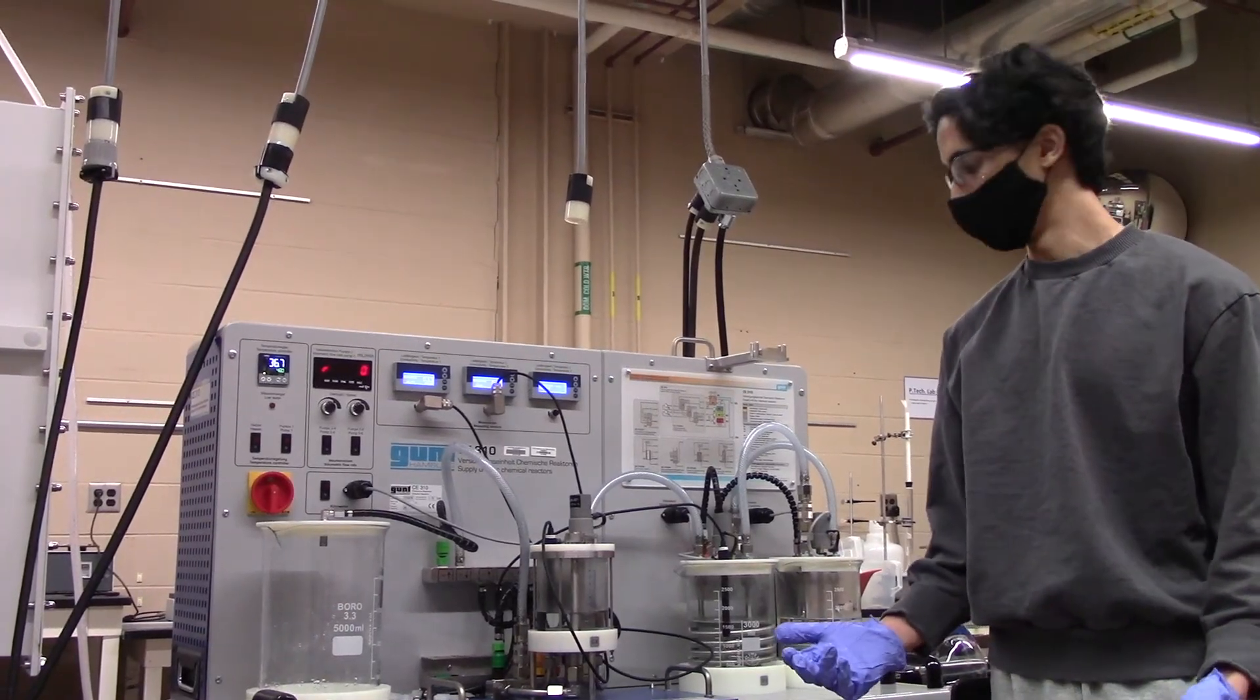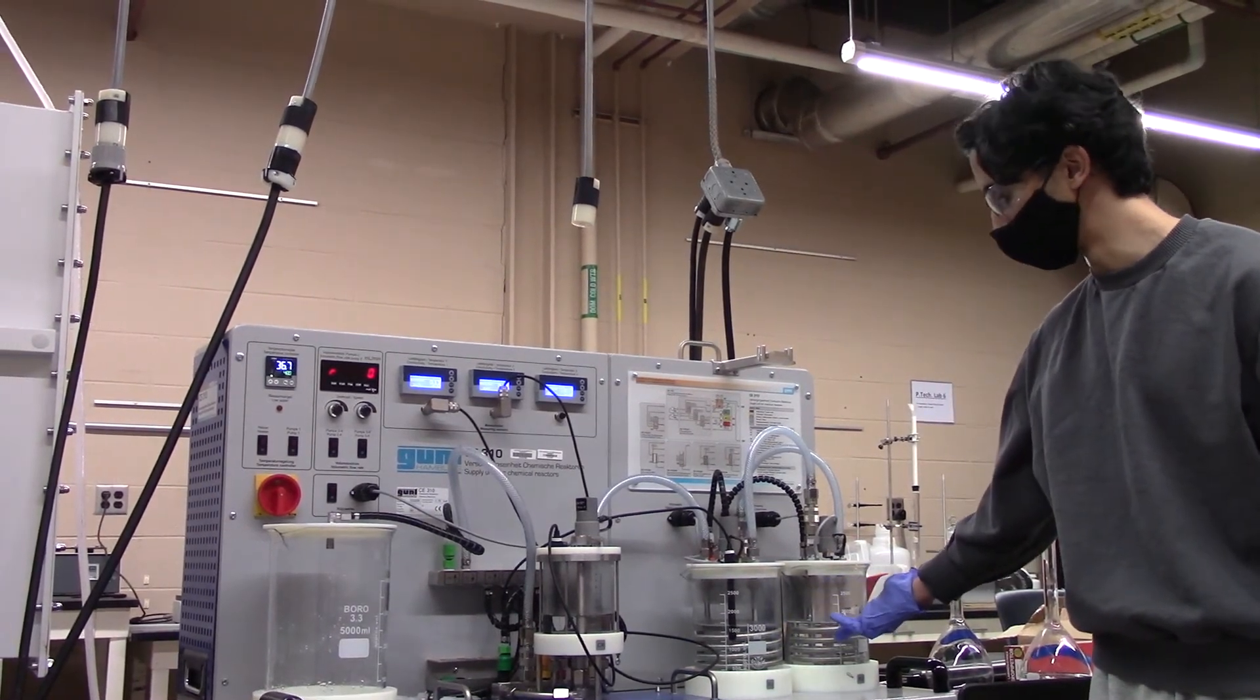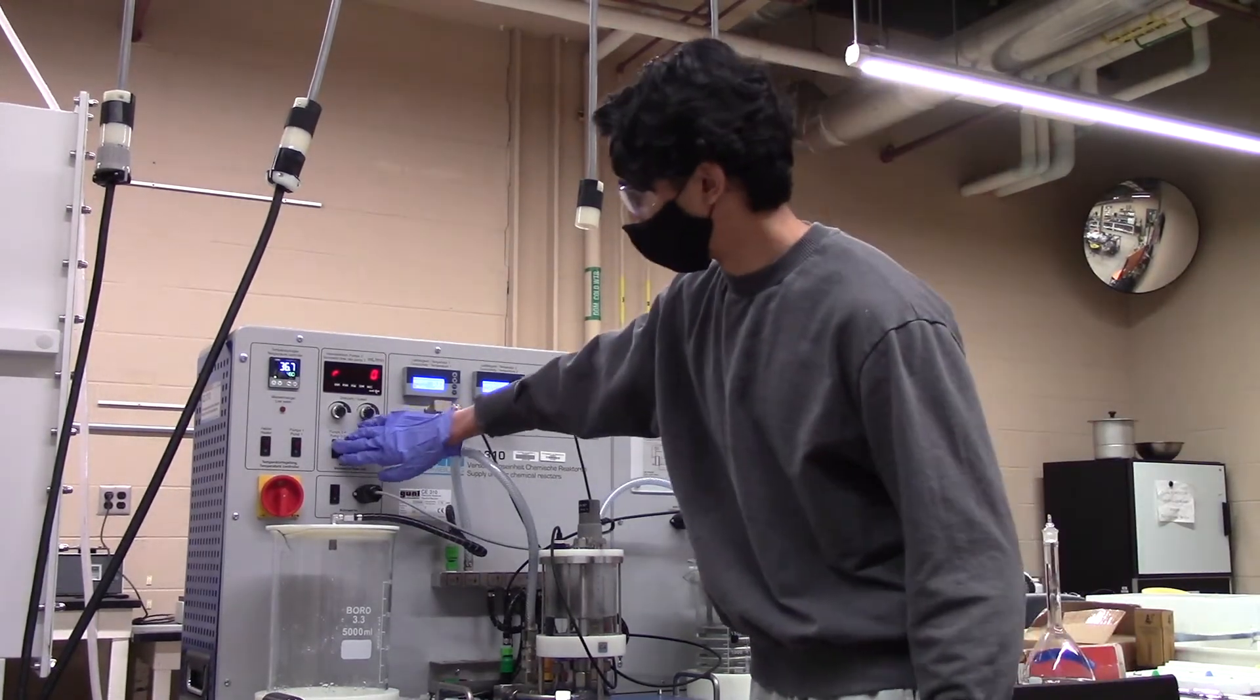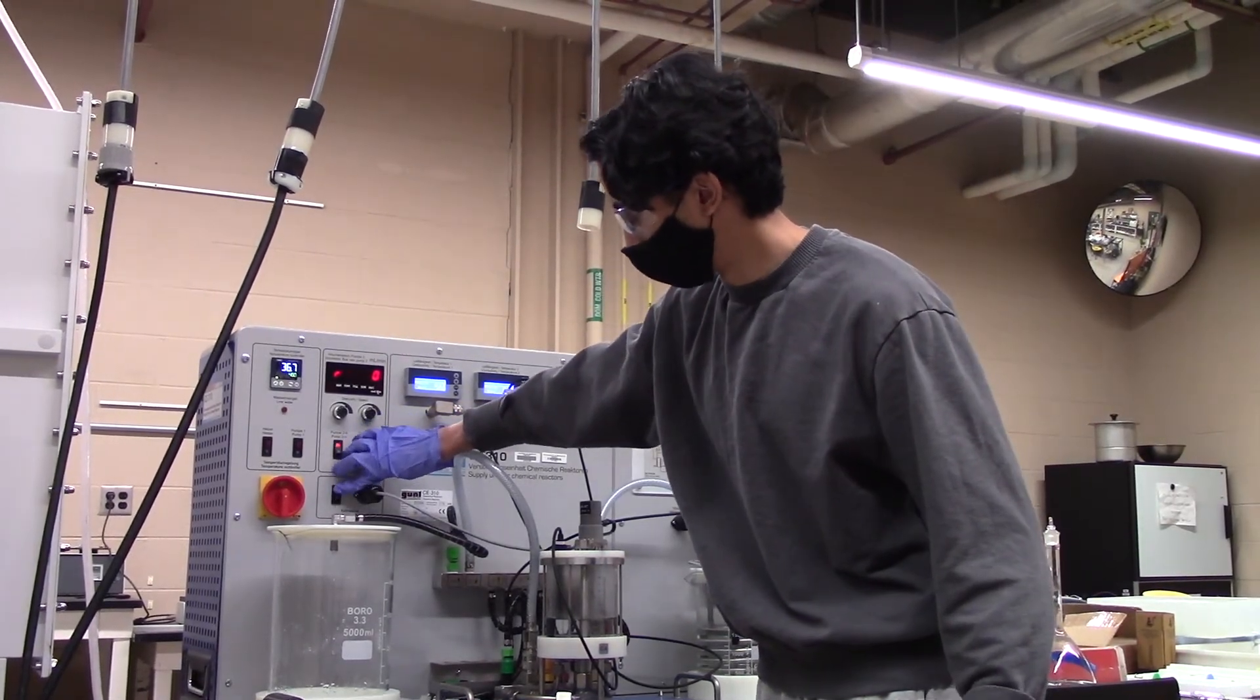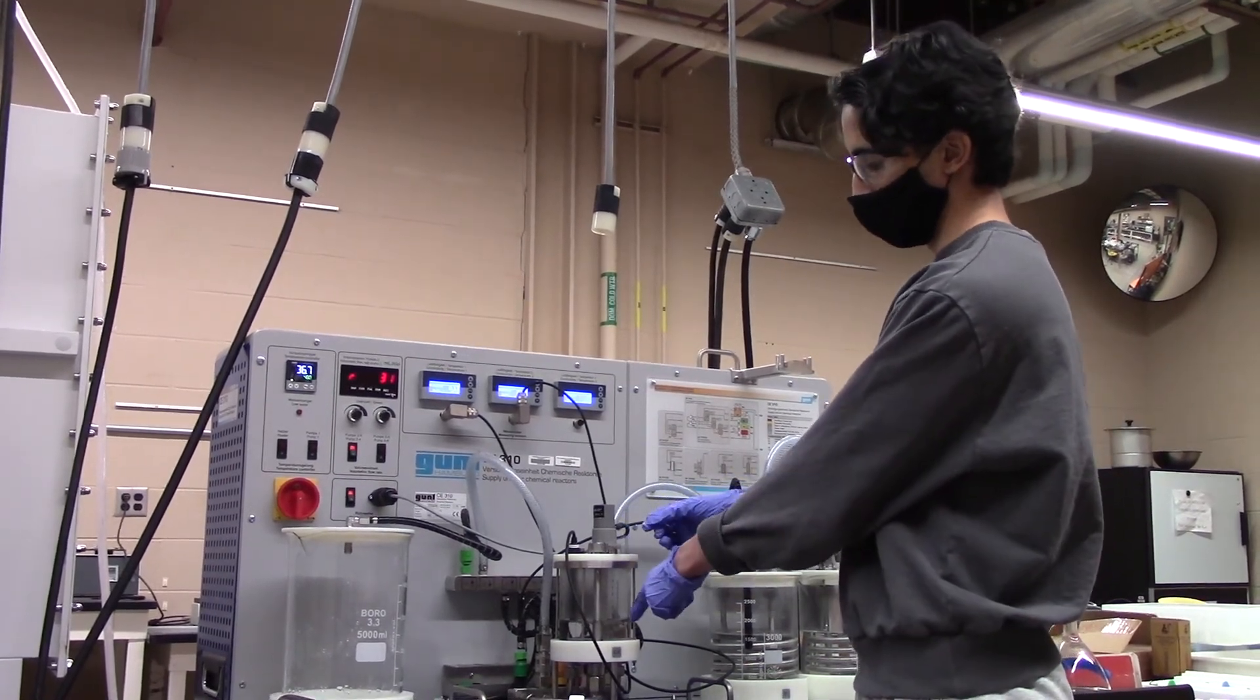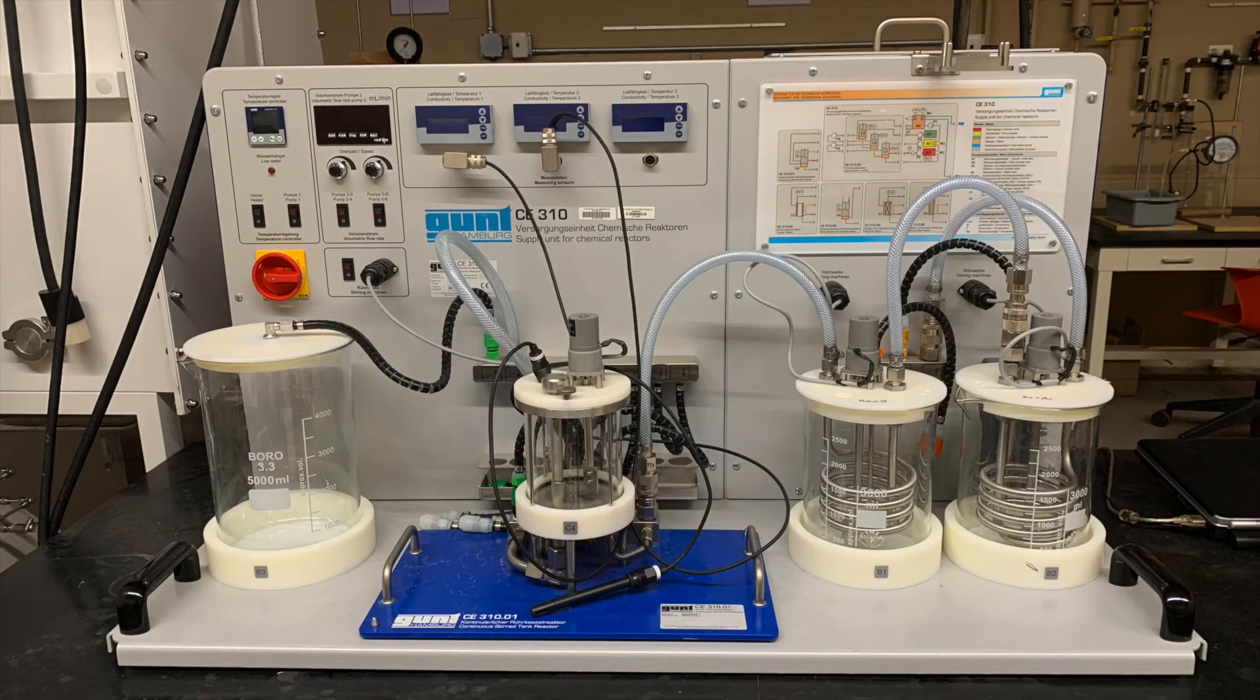Finally, in order to rinse out the CSTR, fill both reactant beakers with water and turn on pumps 2-4 and the stirrer to run the water through the system. Similar to before, pipet out any remaining liquid in the system. This water can be disposed down the drain. Make sure to clean up the lab station before leaving.